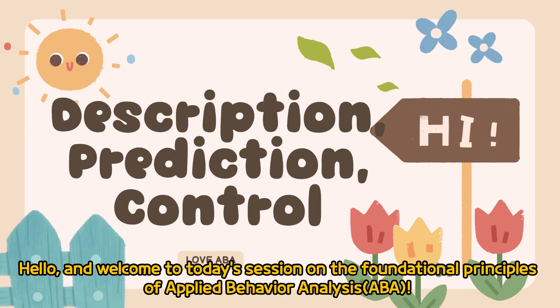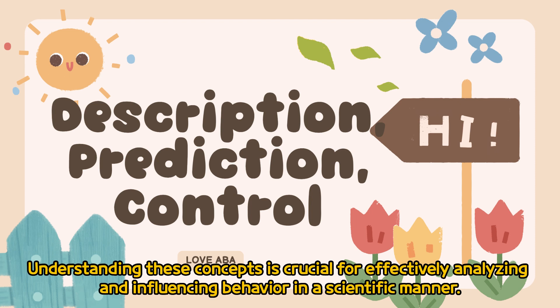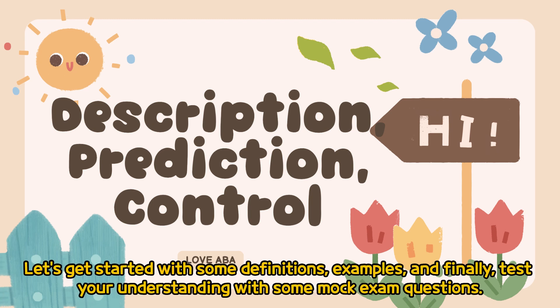Hello and welcome to today's session on the foundational principles of applied behavior analysis. Today we'll delve into the core scientific levels of understanding that guide our work in ABA: Description, Prediction, and Control. Understanding these concepts is crucial for effectively analyzing and influencing behavior in a scientific manner. Let's get started with some definitions, examples, and finally, test your understanding with some mock exam questions.